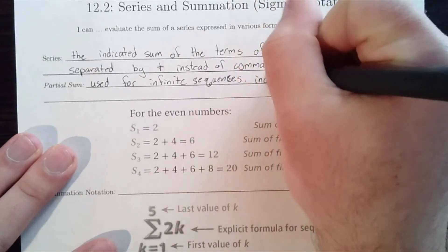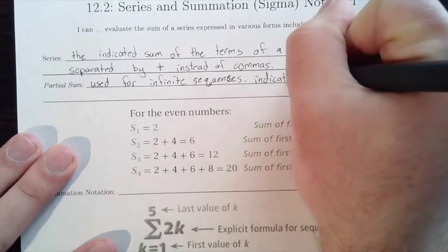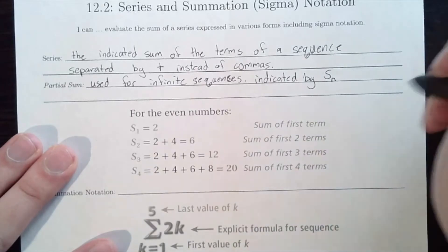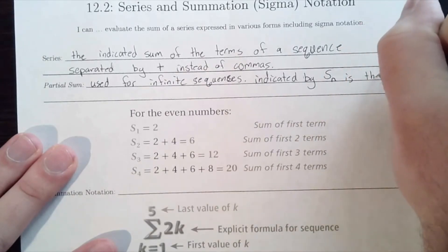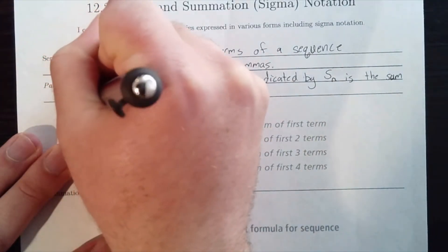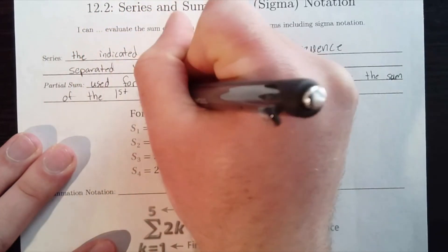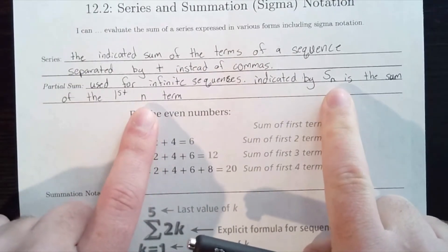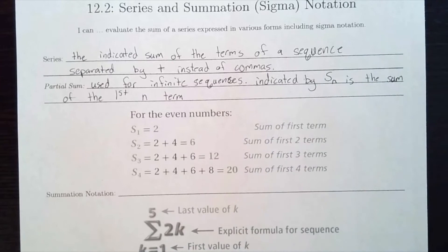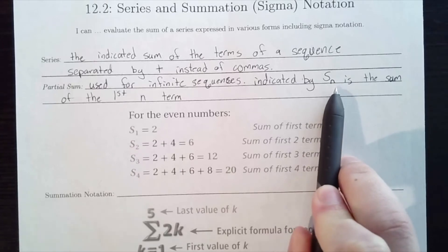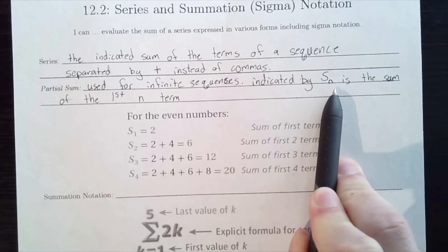Partial sums are indicated using capital S with a subscript of N — written S sub N — and that represents the sum of the first N terms. The subscript tells us the last term number we include. So S sub 6 means the sixth term is the last one included, but we use every term that comes before it: first, second, third, fourth, fifth, and then ending with the sixth.